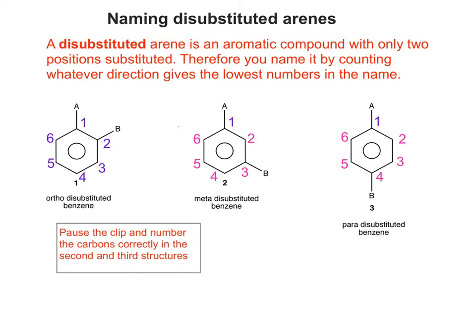This would be the obvious way to do number 2, but number 3 can be done either way round - and that's because it's symmetrical. So it doesn't matter which way round you do it, you'll still get the same numbering.